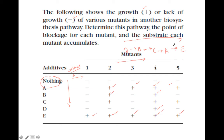Now let's look at it from the mutants' perspective. If you provide E, all of them will grow. But if you see mutant 1 — providing anything other than E, it will not grow. Even if you provide A, it will not grow because the cycle cannot go further from C, B, or D either. So mutant 1 is just ahead of A.